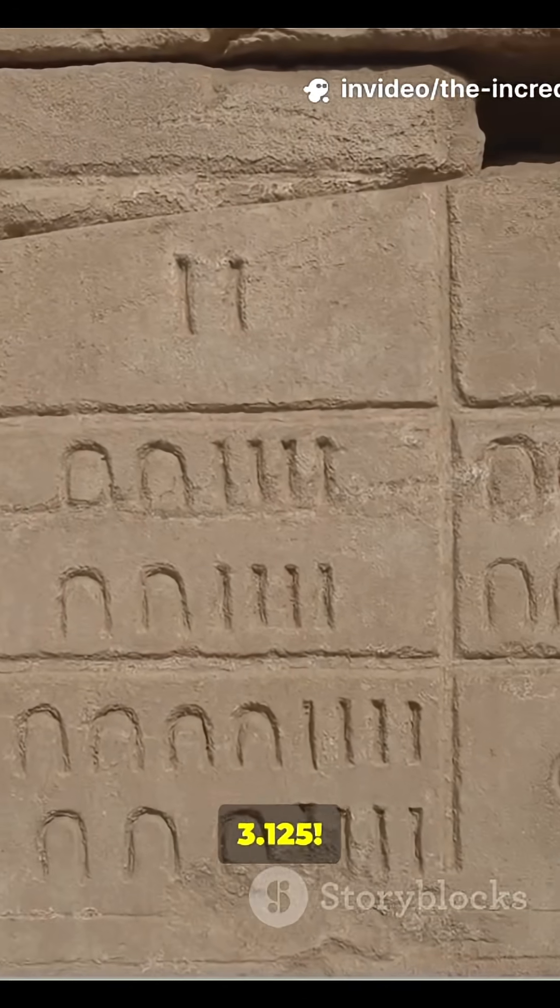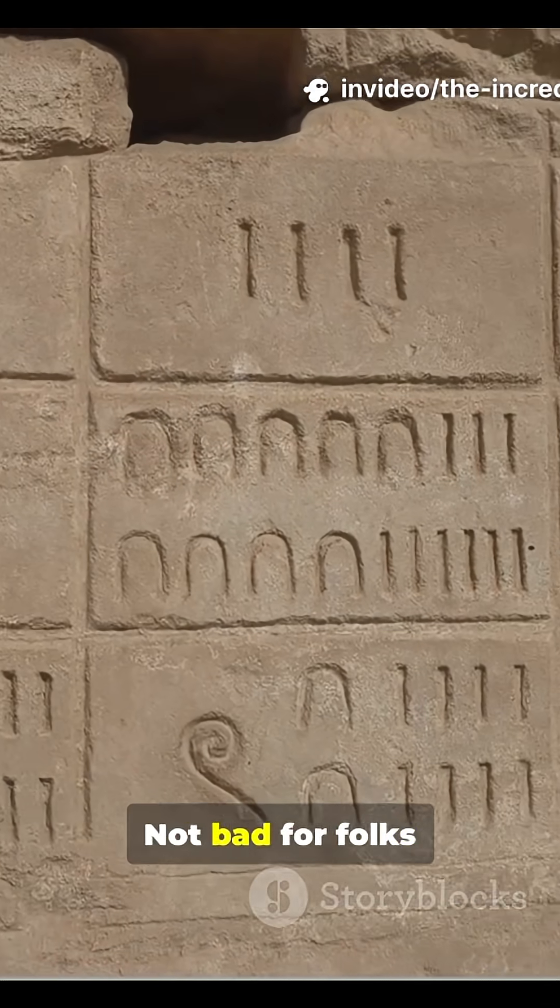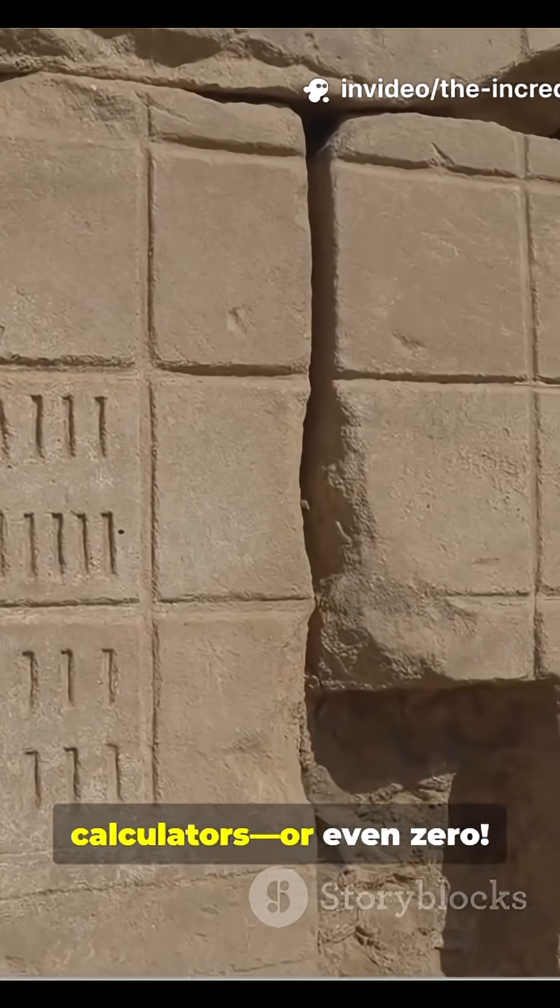Ancient Babylonians were already crunching numbers and chasing pi. Their best guess? 3.125. Not bad for folks without calculators, or even zero.